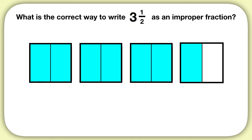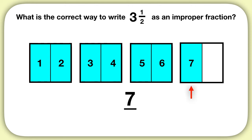Now I need to count up how many pieces I have. How many pieces are shaded? There are 7 shaded pieces. So my numerator will be 7. Now what is the denominator of my fraction? Well in this problem we have halves, so my denominator will be 2 to show that I have 7 halves. We've found that 3 and 1 half can be written as the improper fraction 7 halves.